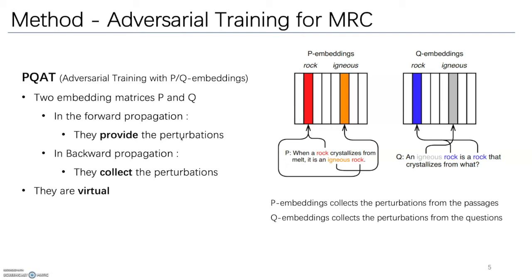In the backward propagation, P and Q embeddings collect and store new perturbations for words in passages and questions. Note that P and Q are virtual in the sense that they store only perturbations, not the usual embeddings.